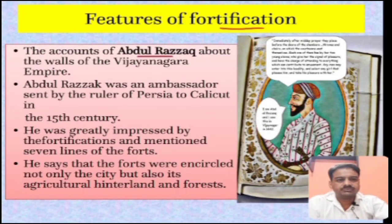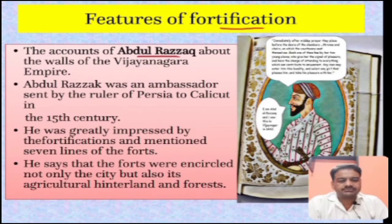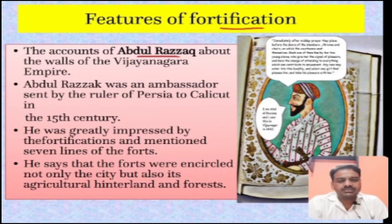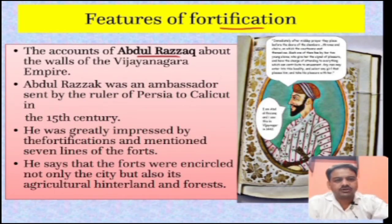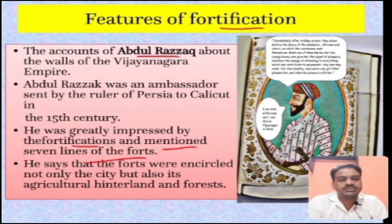The account of Abdul Razak - Abdul Razak was an ambassador sent to India by the ruler of Persia, to Calicut in South India, which used to be a part of the Vijayanagara empire. He came as an ambassador in the 15th century and wrote about whatever he observed. He was greatly impressed by the fortification of Vijayanagara and mentioned that there used to be seven lines of forts - seven walls which protected the city center.